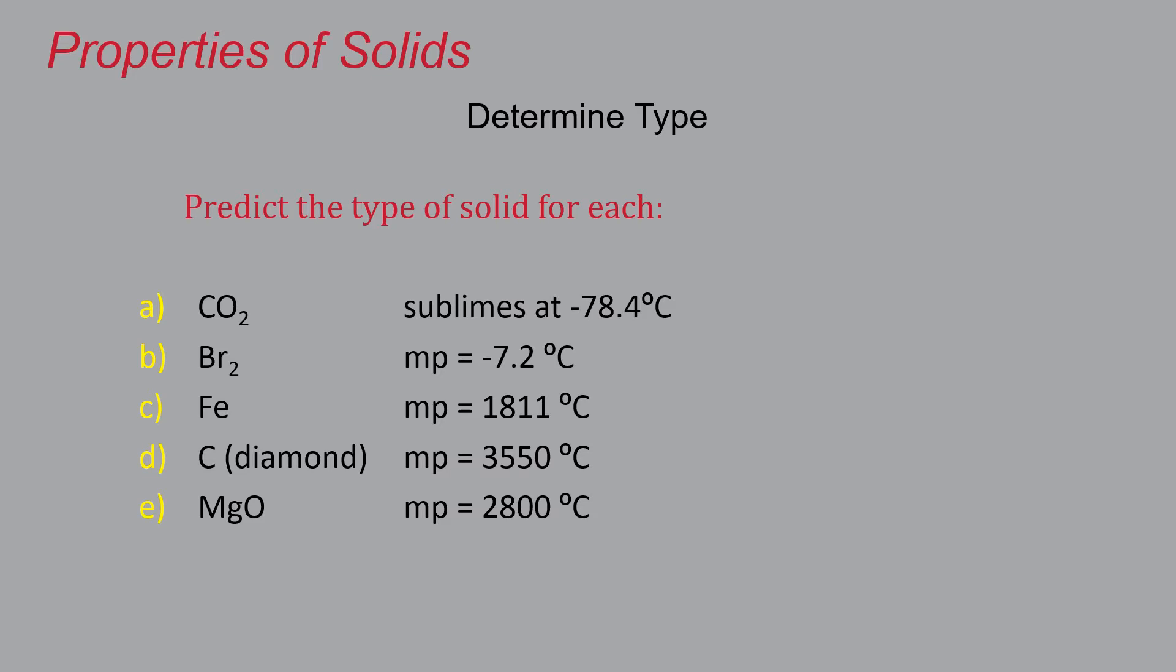All right, so there's a few ways you can go about this. Some of these you can figure out from the formula and the fact that some of the classifications don't have a whole lot of examples. So let's look at the first one, carbon dioxide.